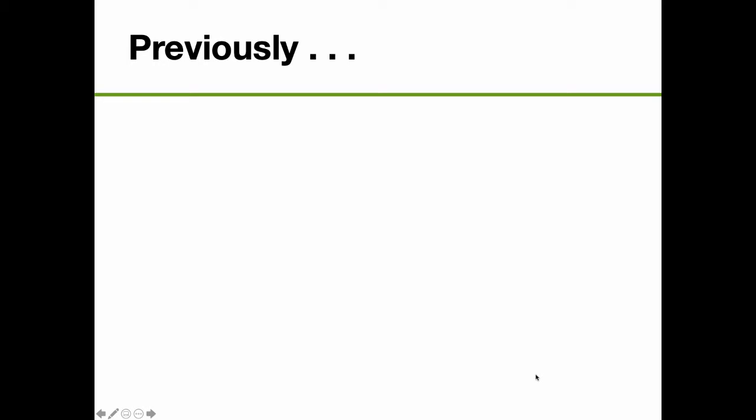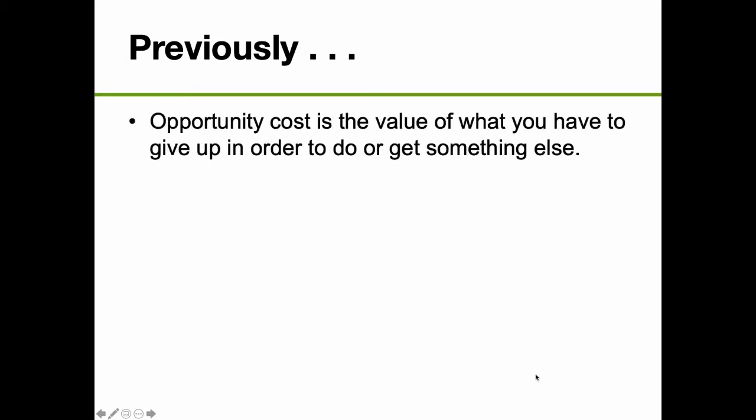Previously, we talked about some of the basic ideas in economics. One of those ideas was the opportunity cost — the value of what you have to give up in order to get or do something else. For example, if you're going to get out of bed at a certain time, it means you have to give up some extra sleep. Or if you're going to study harder for the economics exam, it means maybe you don't have the chance to go out with your friends. Every choice we make entails an opportunity cost.